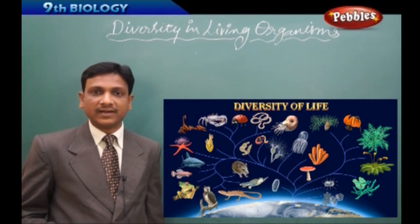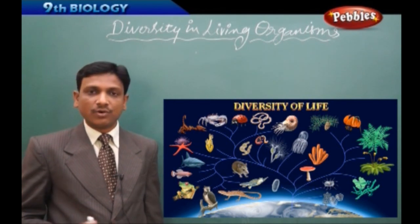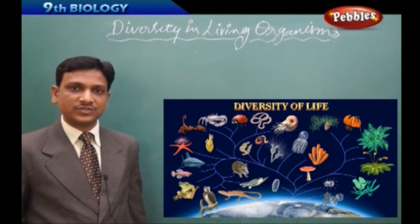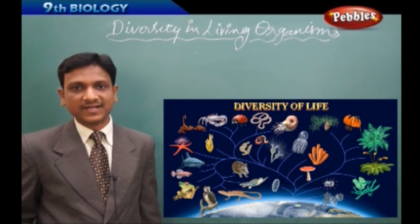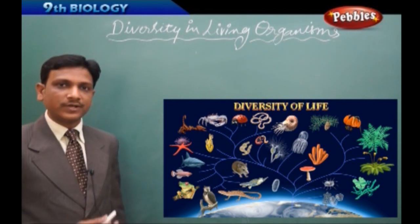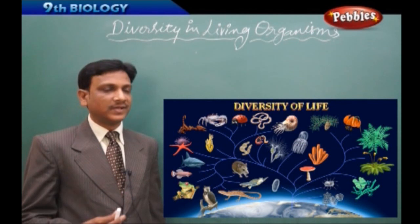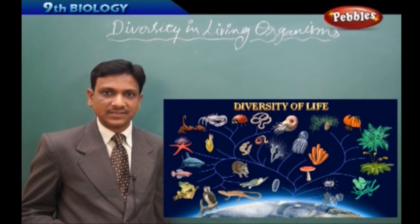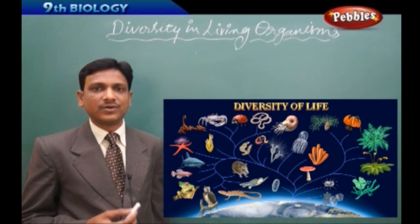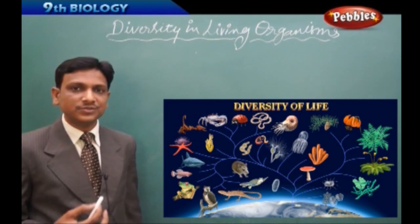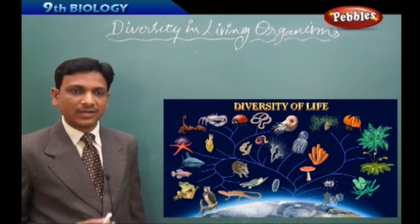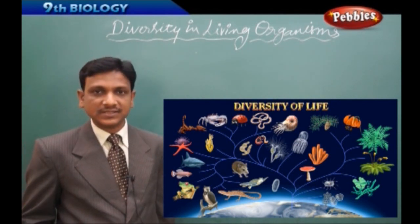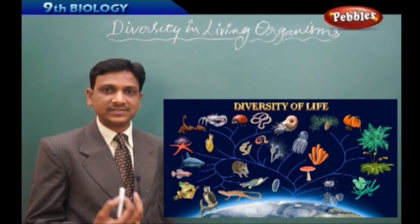Until now we have studied more than one lakh varieties of organisms. Humans study nature and different organisms — plants, animals, microorganisms — because we find uses for the organisms around us, and by understanding nature we can find solutions to problems that happen in the environment and in biological systems.